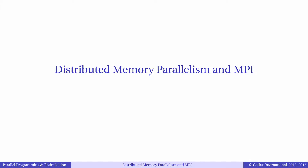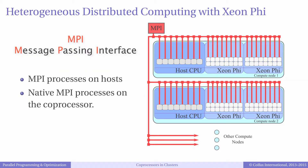MPI, or Message Passing Interface, is a communication protocol. It allows multiple processors which do not share common memory but reside on a common network to perform parallel calculations. MPI allows processors to communicate with each other by way of passing messages.